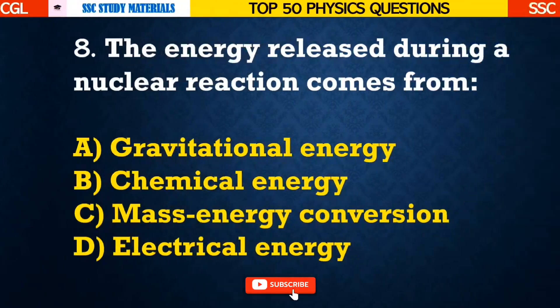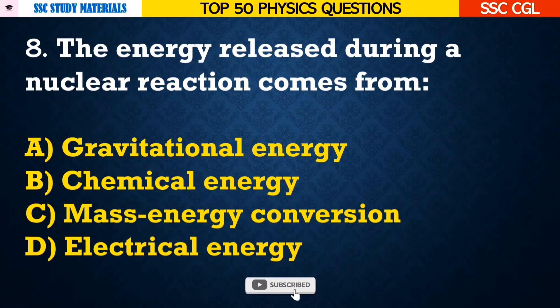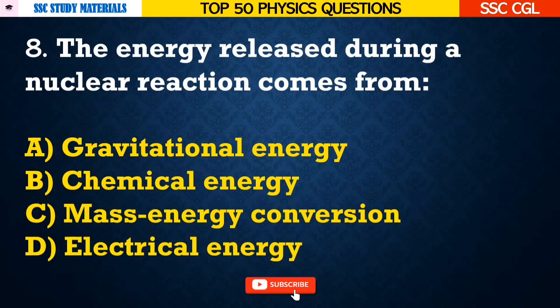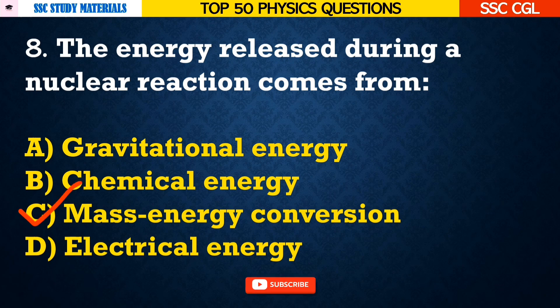Question number 8: The energy released during a nuclear reaction comes from — Answer C. Mass-energy conversion.